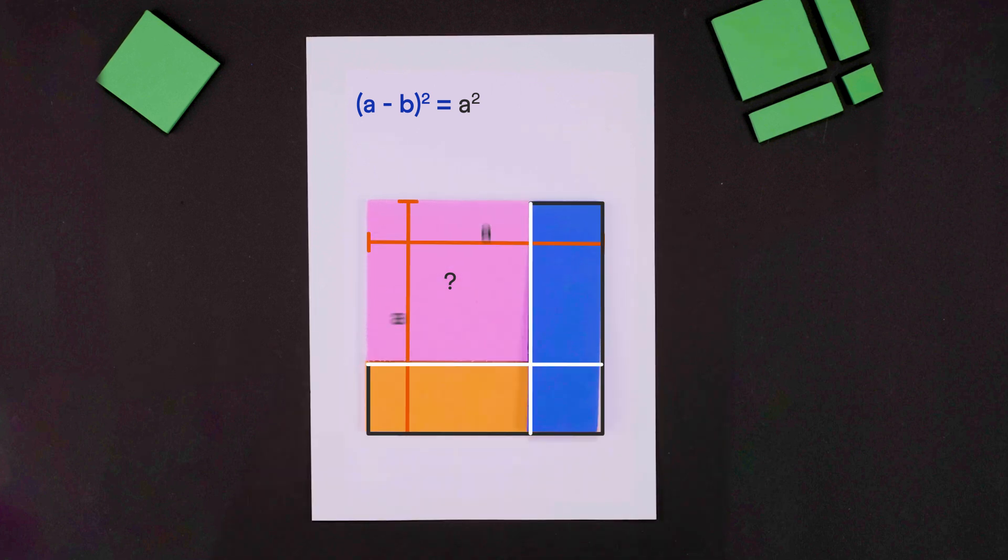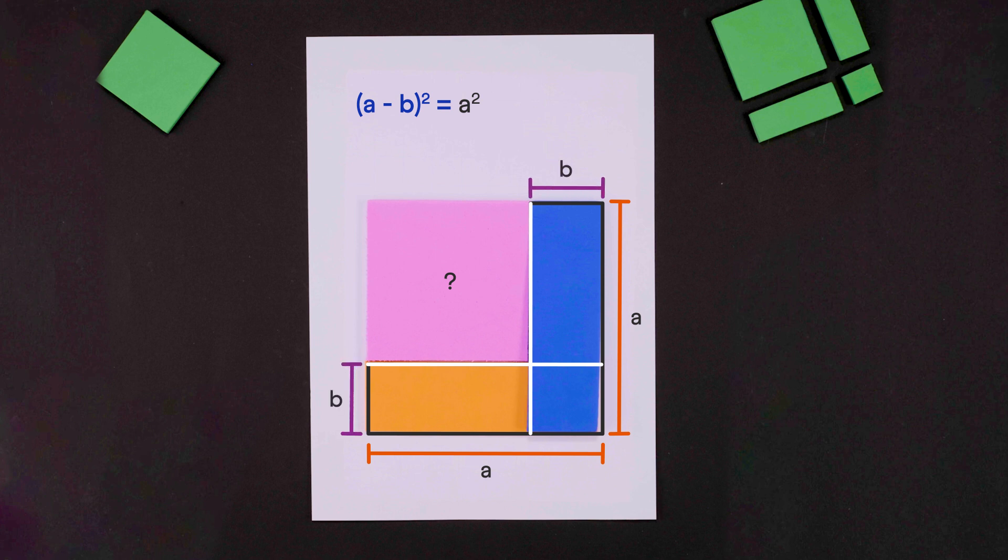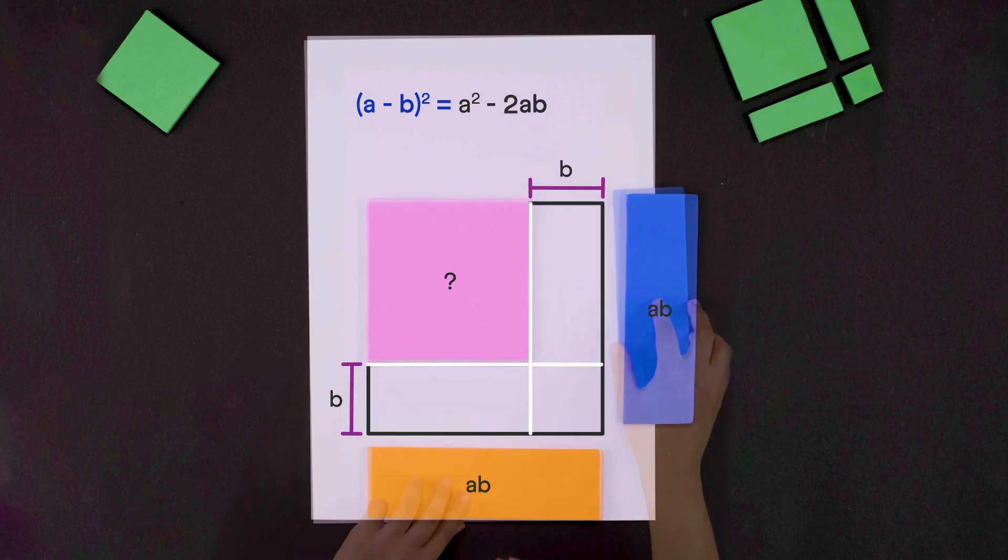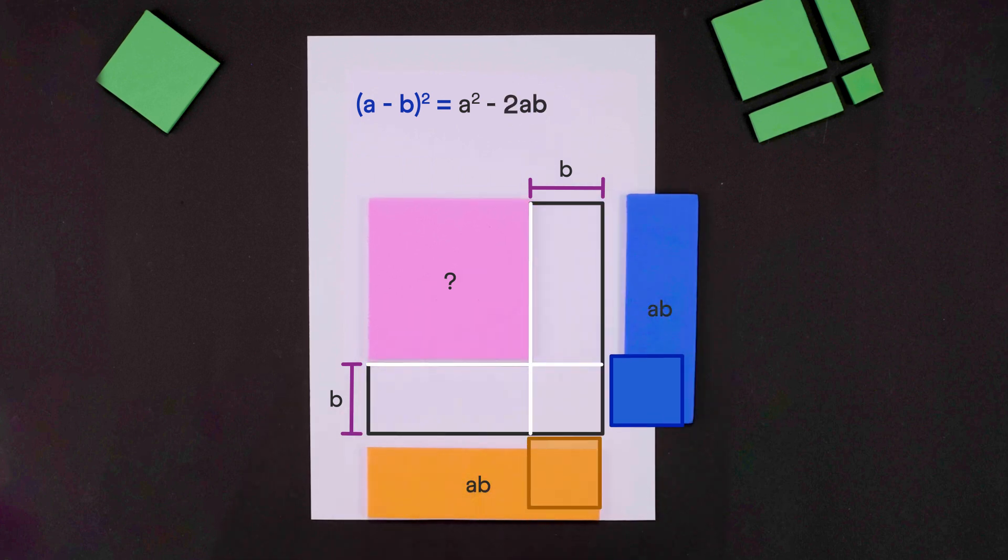Their longer sides measure a units and their shorter sides measure b units. So each has an area of a times b. So we get a squared minus 2ab. But wait, we subtracted this overlapping area twice. So we need to add it back once.